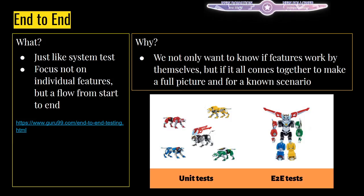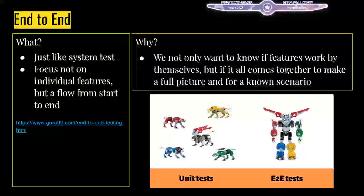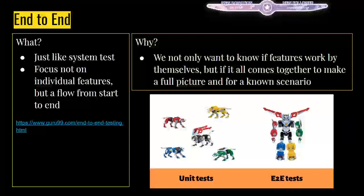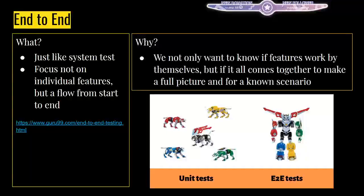A different thing from system test - almost the same but slightly different - is end-to-end testing. We take scenarios: what needs to be done to achieve thing X, and from start to finish we do those things step by step to see if it works. If we follow a scenario executed on a system, that is end-to-end. End-to-end is a special case of system test when we apply a scenario or flow. We want to know if stuff not only works when it all comes together, but if a certain flow doesn't break things.